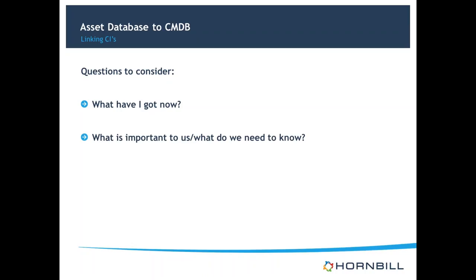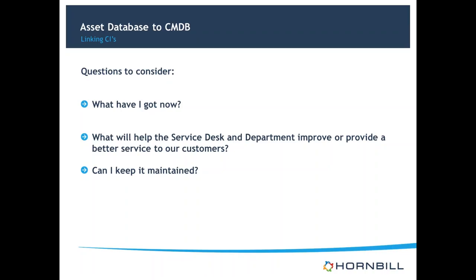Once we do know what we've got, we need to consider what's important to us in terms of service delivery. What's important to help us deliver a better service to our business and to our customers? Do we need to know such granular levels of our architecture by way of whether that's going to help us provision and service support out to our customers? Once we have an idea of what's important, we really need to know how it's going to be maintained. If we put it into our system and relate it, we have to maintain it, otherwise we'll lose that information. The main benefit of the CMDB, certainly within SupportWorks, is what will help our service desk and our business improve the provision of services out to our customers.